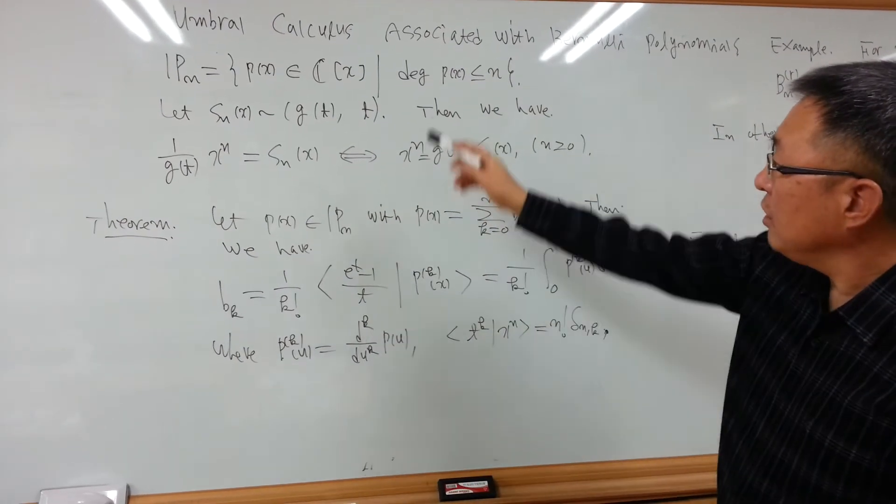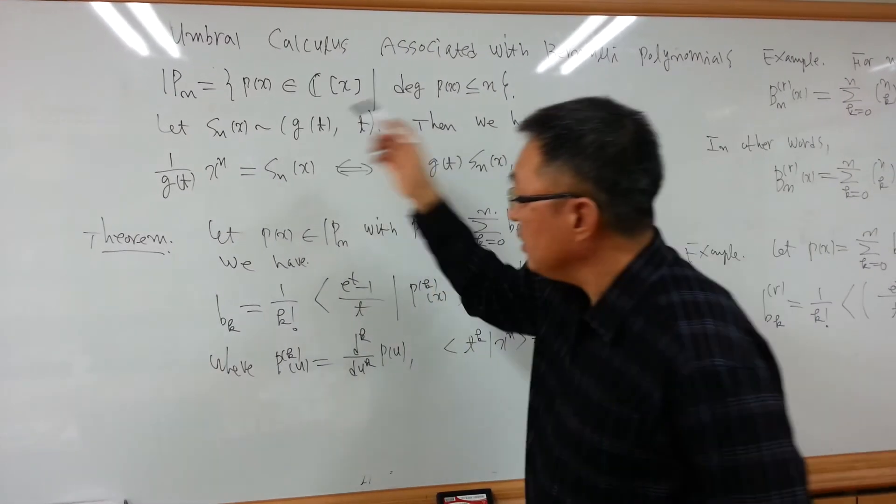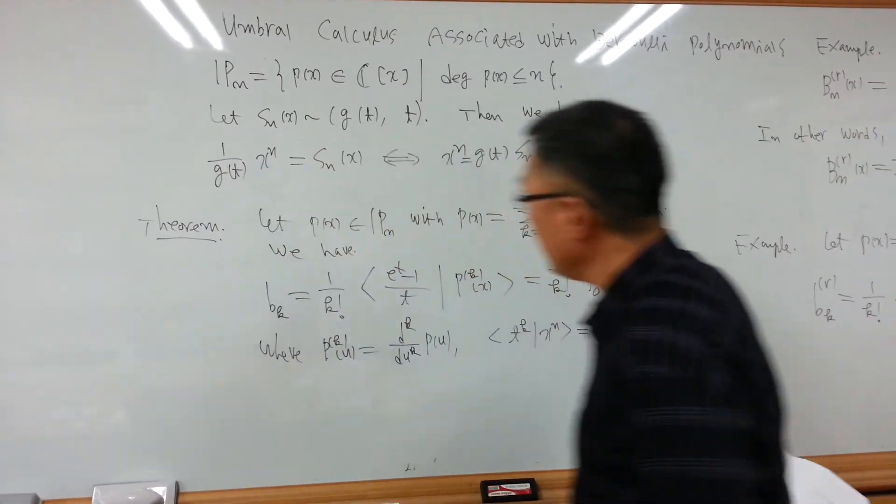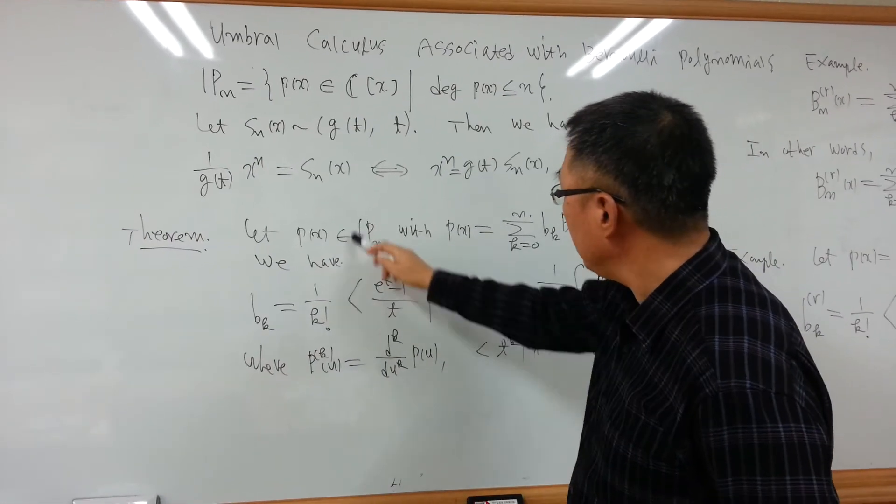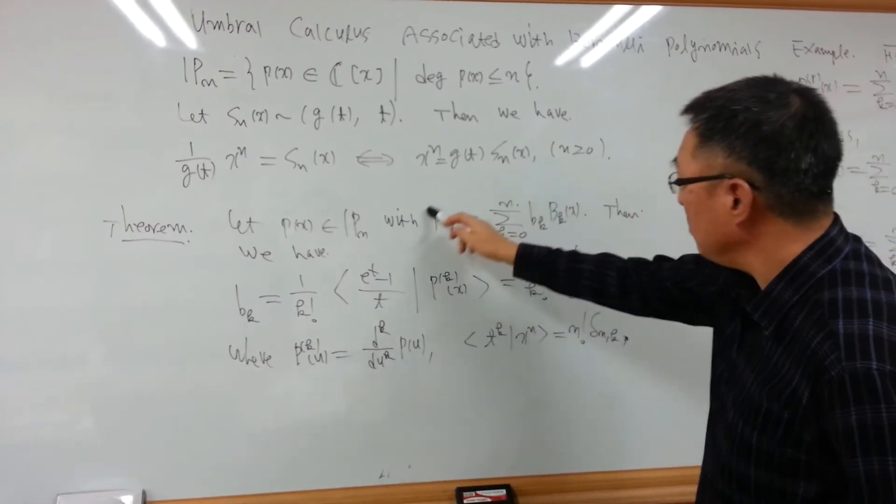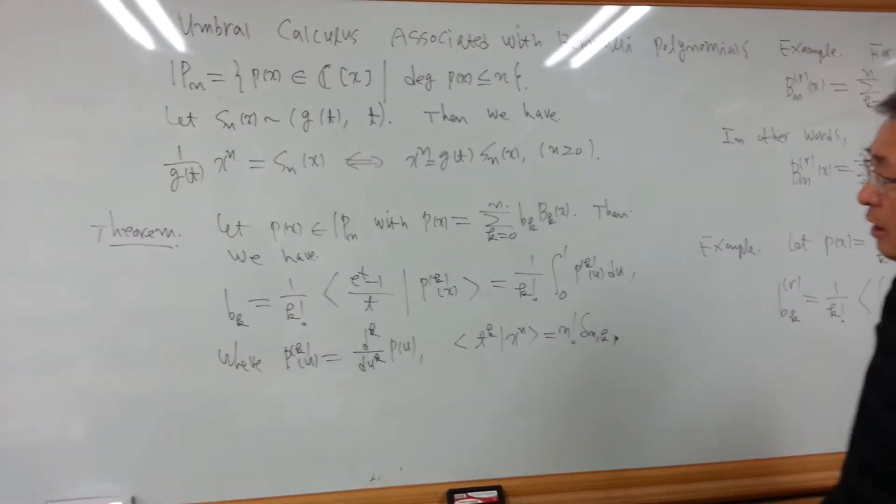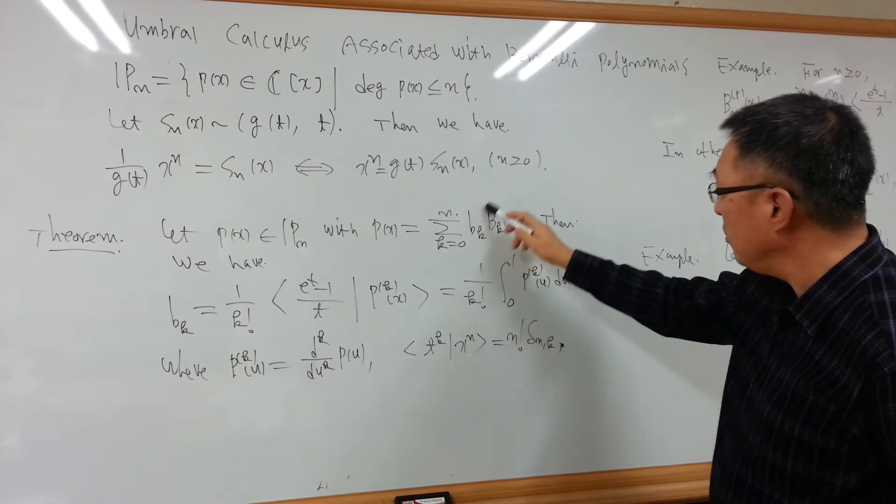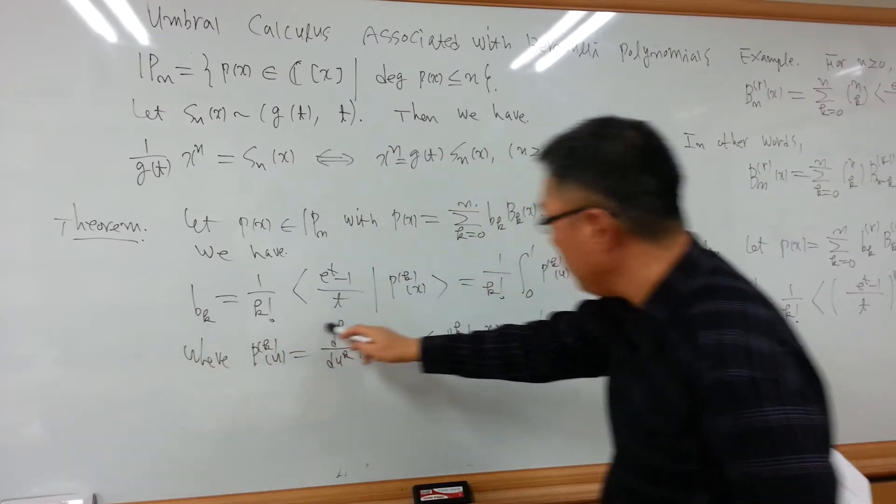From the properties of the shape sequence, we note that the following main theorem: Px is the polynomial in Pn, the space Pn, with this type form. Then Px can be written by linear combination of Bernoulli polynomials Bk(x). Then we can derive the Bk equal to like this.